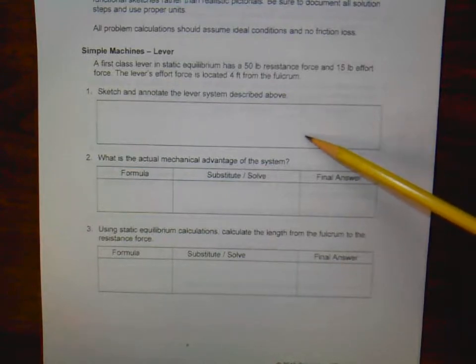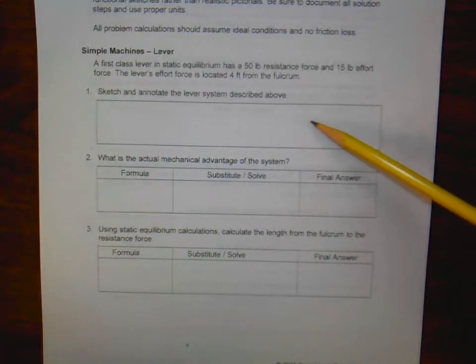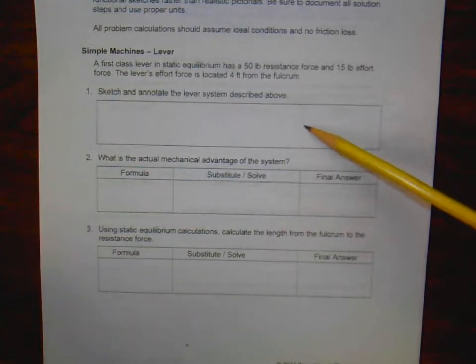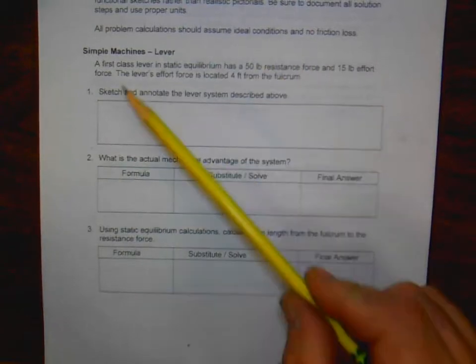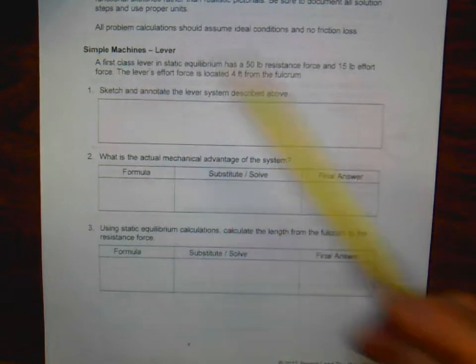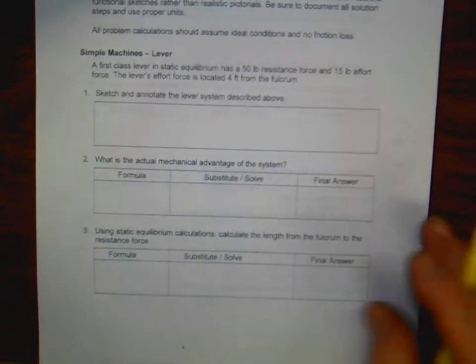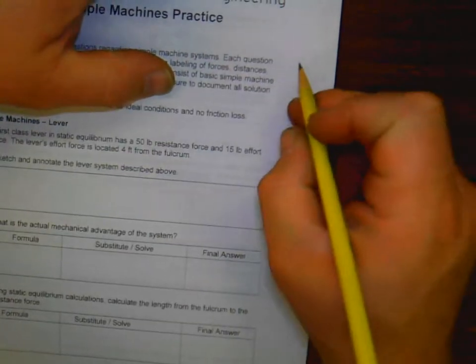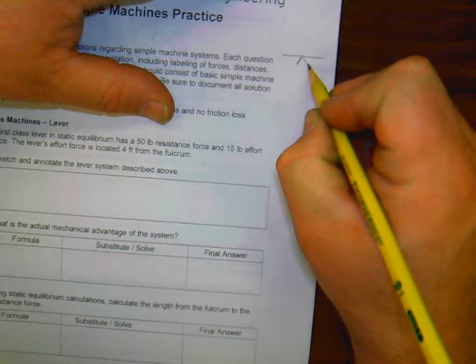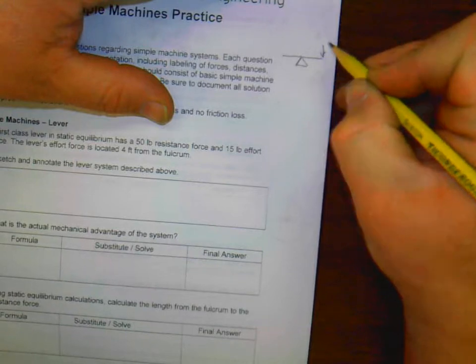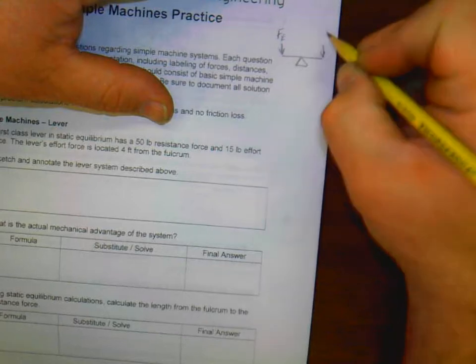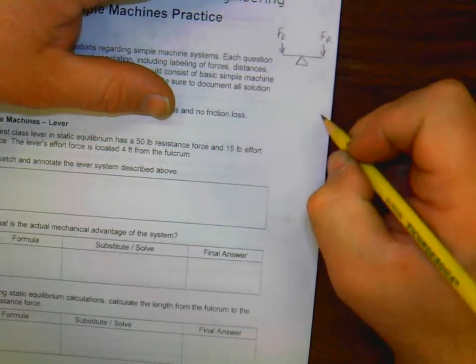First thing that you need to do here is to sketch and annotate the lever system described above. So now we know some things right off the bat based on what we've been told in the word problem. It is a first-class lever. Because it is a first-class lever, we've got three conditions that could occur. So we could have a lever right here with the fulcrum right in the middle and forces, our effort force and our resistance force, equal distance from the two.